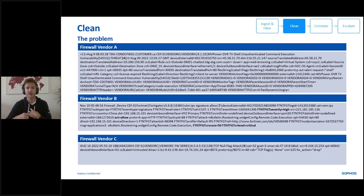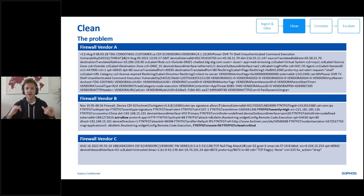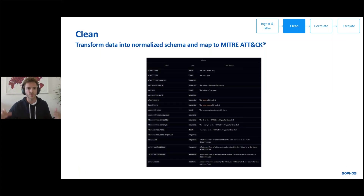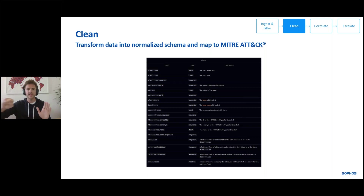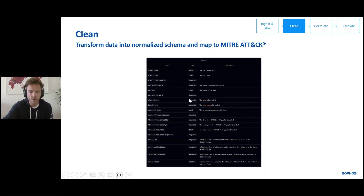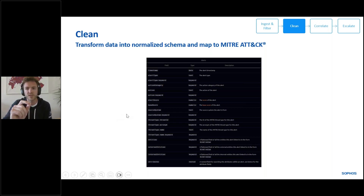That's the problem we take on. Our very first step in this pipeline is to take all that seemingly independent noise and those crappy logs coming in and clean them into a beautiful structure. We transform every single log, and when it comes out of our pipeline in that clean function, we've normalized it into a schema and we've mapped it automatically to MITRE ATT&CK. This is super important for our analysts to do threat hunting and for us to do the high-value tasks at the back end, which is correlation and escalation.